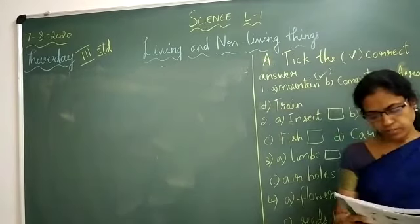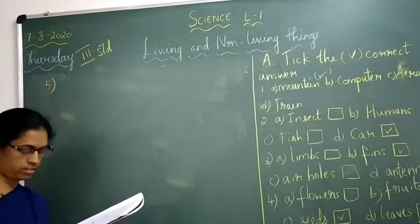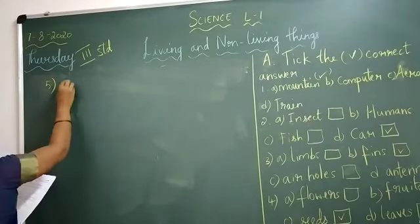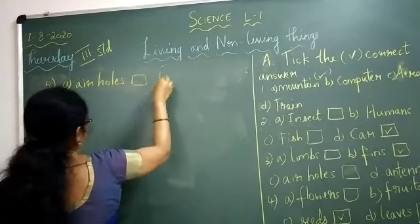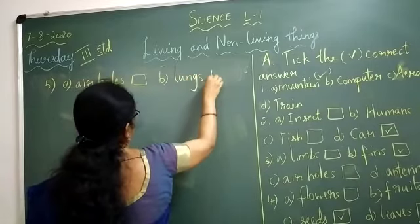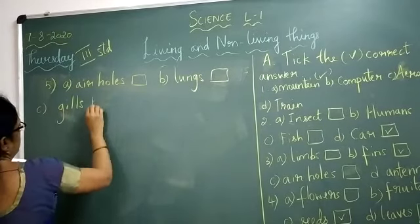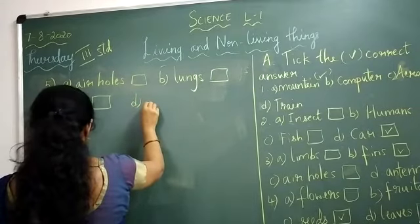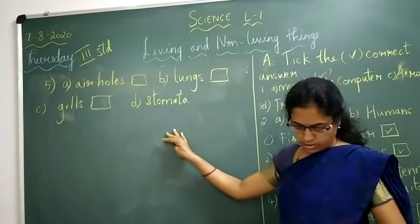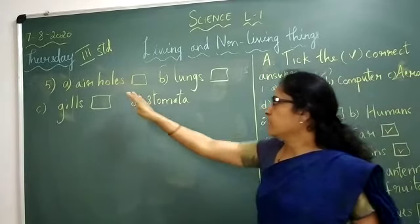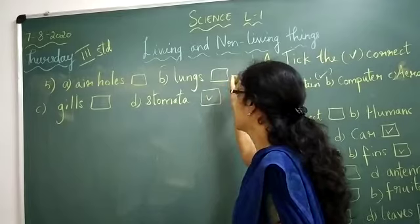Fifth one: tiny holes present on the leaves of a plant are called. The options are: A — air holes, B — lungs, C — gills, D — stomata. Which is the correct answer? Air holes? No. Lungs? No. Gills? No. Stomata is the correct option.